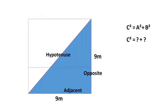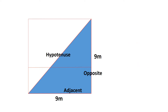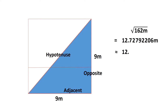We find our answer by substituting the lengths of A squared and B squared, meaning we are left with C squared equals 9 metres squared plus 9 metres squared, meaning that C squared equals 162 metres. To find out how far the ball travelled, we must find the square root of 162 metres. The square root of 162 metres is approximately 12.73 metres rounded to two decimal places. This is how far the ball has travelled to gain your point.